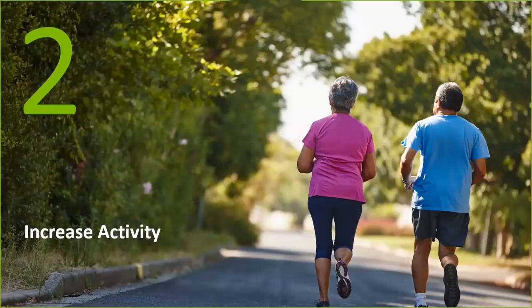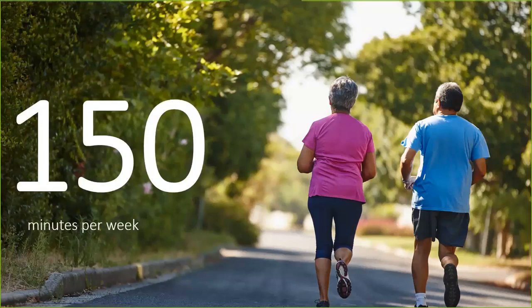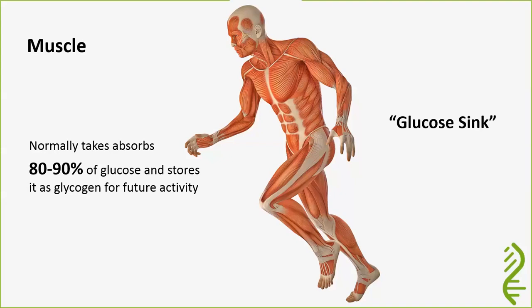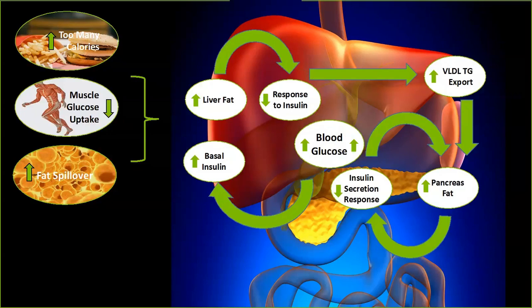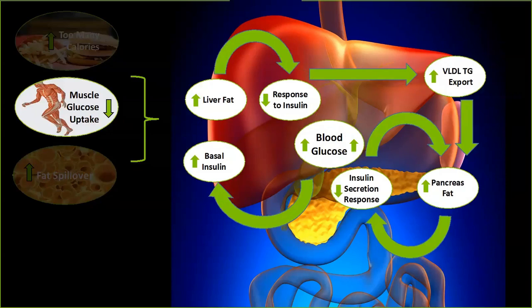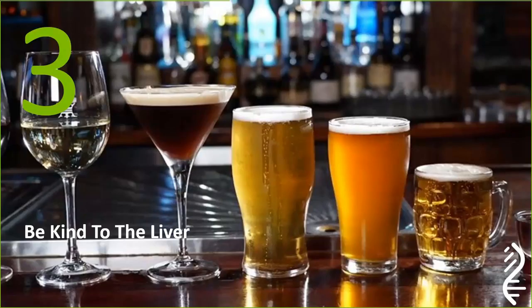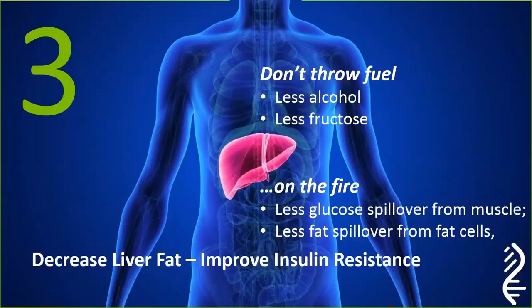Step two is to increase activity. This comes back to the 150 minutes a week of exercise recommended for everyone. This is all about making the muscles work and do their job as the glucose tank. When we looked at this from a liver fat perspective, decreased muscle glucose uptake results in liver fat, so we need to get the muscles playing their role. Step three is to be kind to our liver — the problem is liver fat developing, which decreases our ability to respond to our own insulin. Don't throw fuel on the fire: alcohol and fructose are going to lead to more liver fat. If we stop doing that, it's going to help.